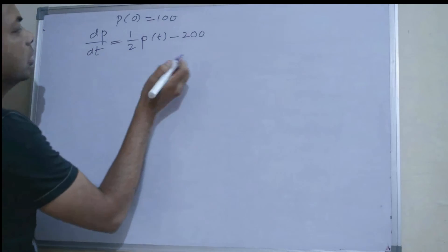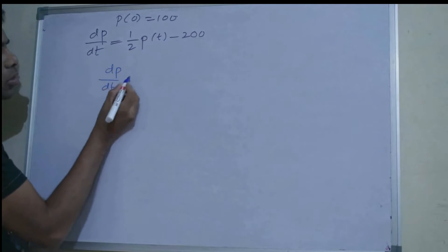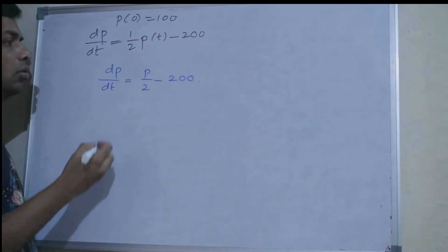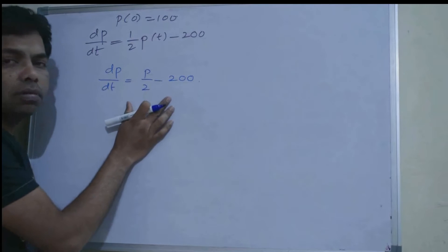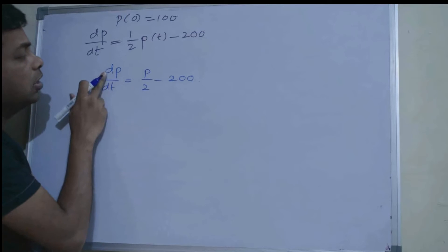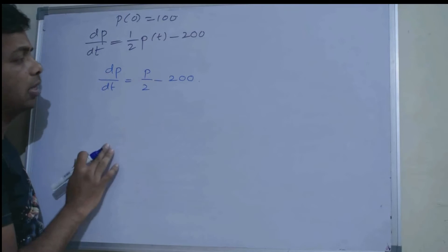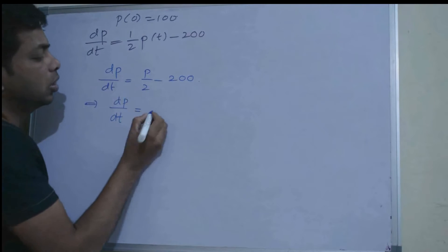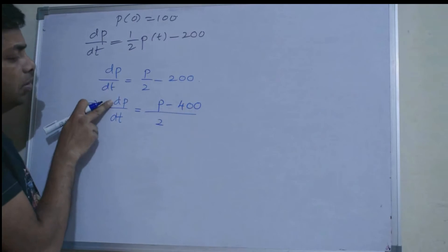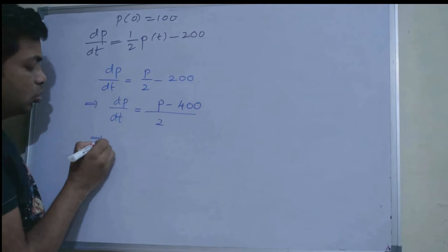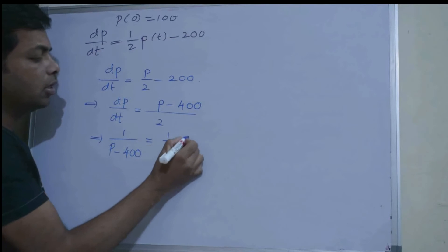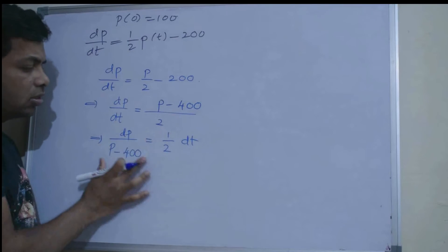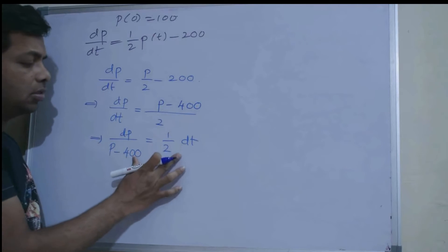Now, how will we solve this problem? dp/dt = p/2 - 200. This is a differential equation which can be solved by the variable separable method — we can separate the variables, putting p terms on one side and dt on the other. Taking 2 as LCM: dp/dt = (p - 400)/2. So dp/(p - 400) = (1/2)dt. Variables are now clearly separated.